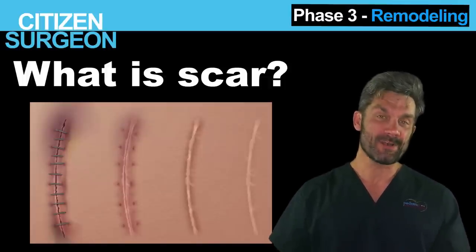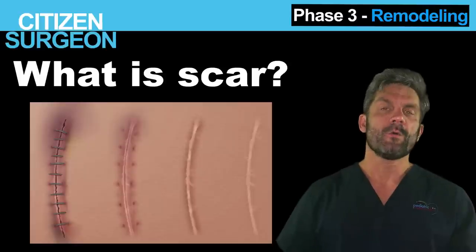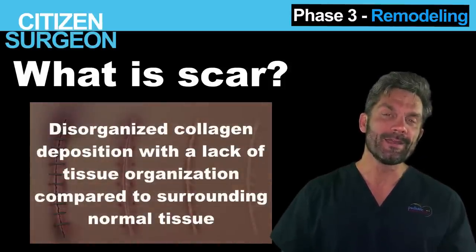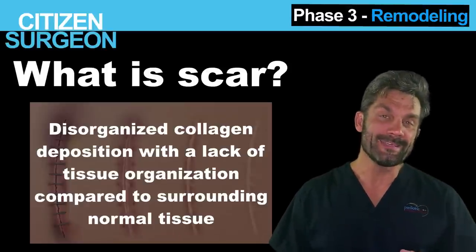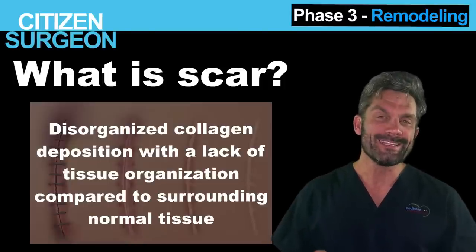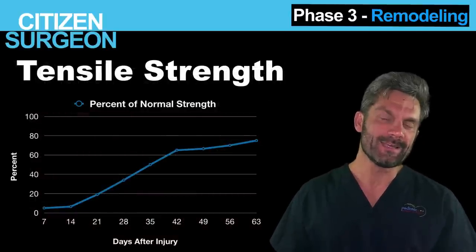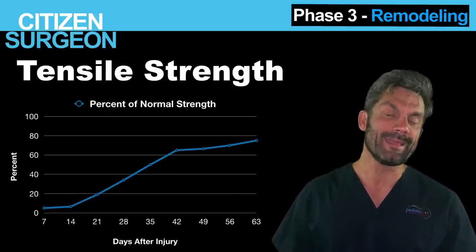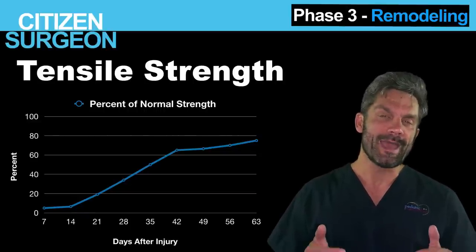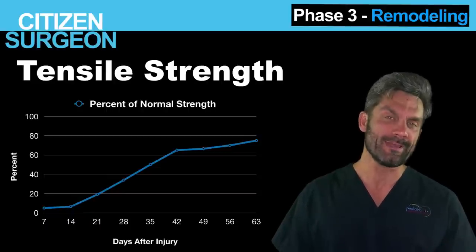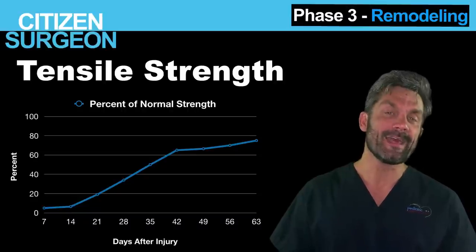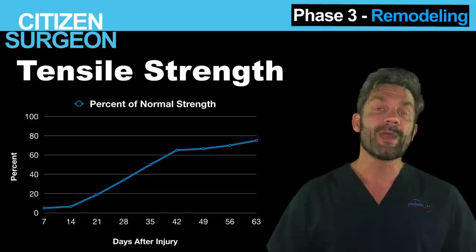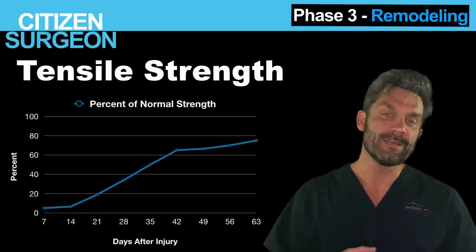What is scar, and what's the difference from normal skin? Scar is where you have disorganized collagen deposition and disorganized tissue architecture compared to surrounding skin. In the remodeling phase, one thing frequently tested on exams is tensile strength. The increase in tensile strength is quite rapid in the first few days of a healing wound, but it's still very low as a percentage of normal skin strength. Even after six to eight weeks, a scar only reaches 80% of the tensile strength of normal skin — it will never be the same.